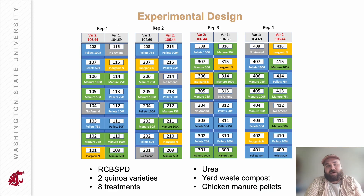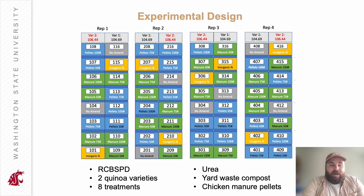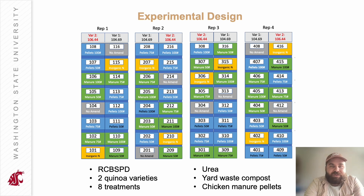To answer these questions, we set up an experiment in 2022. It was designed as a randomized complete block split-plot design, with one of two varieties as the main plot and one of eight different treatments as the split plot. We applied urea, a synthetic source of nitrogen, at 100 pounds per acre, and yard waste compost and chicken manure pellets at 50, 75, and 100 pounds per acre. We also included an unamended control.